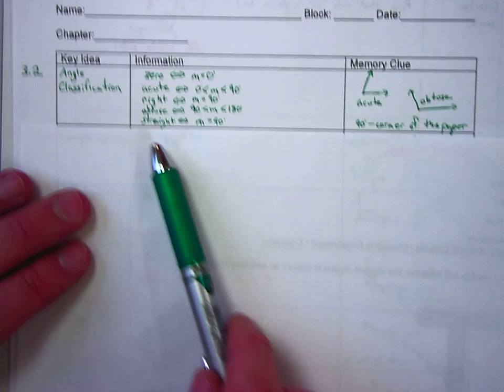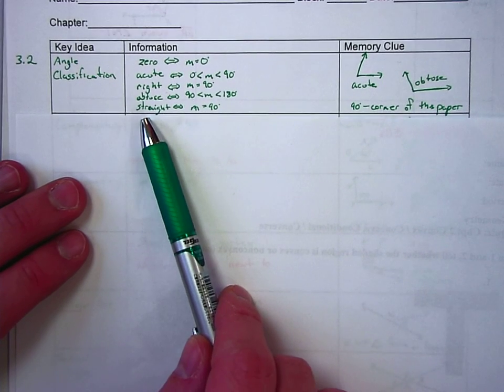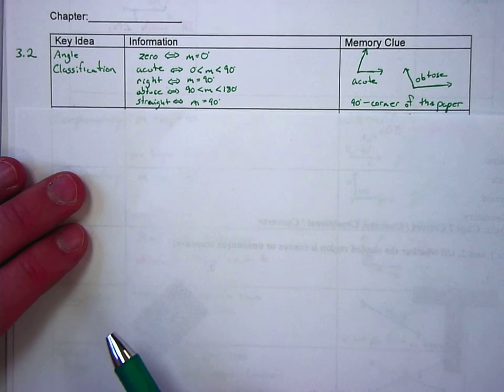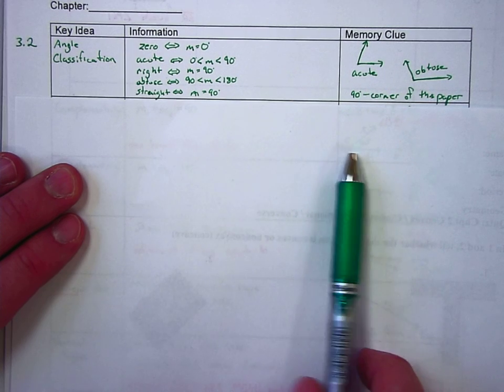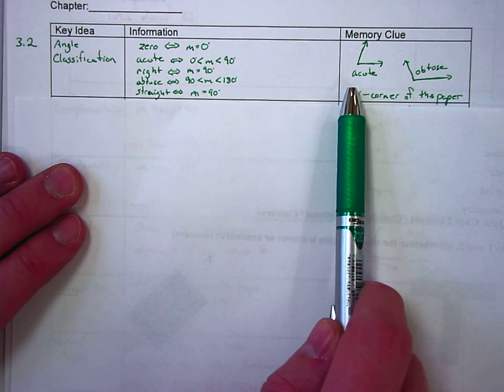An obtuse angle is an angle between 90 degrees and 180. And then you have a straight angle, which is 90 degrees. So there's a picture of an acute angle and a picture of an obtuse angle.